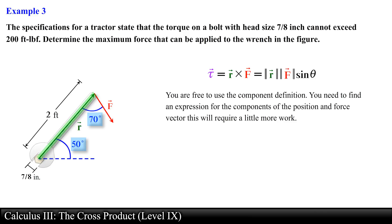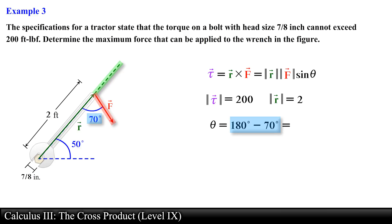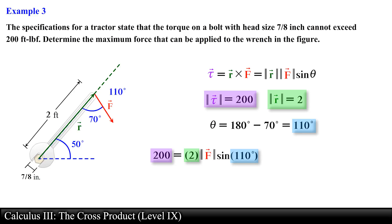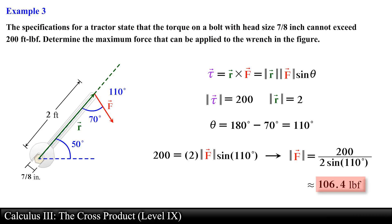We are given the magnitude of the position vector and the magnitude of the torque, as well as two separate angles. Notice that the 50-degree angle is irrelevant to the torque calculation since we need the angle formed between the position and force vectors. That angle is found by subtracting 70 degrees from 180 degrees. Substituting into the geometric definition and solving for the magnitude of the force vector, we obtain 106.4 pounds as the final answer.